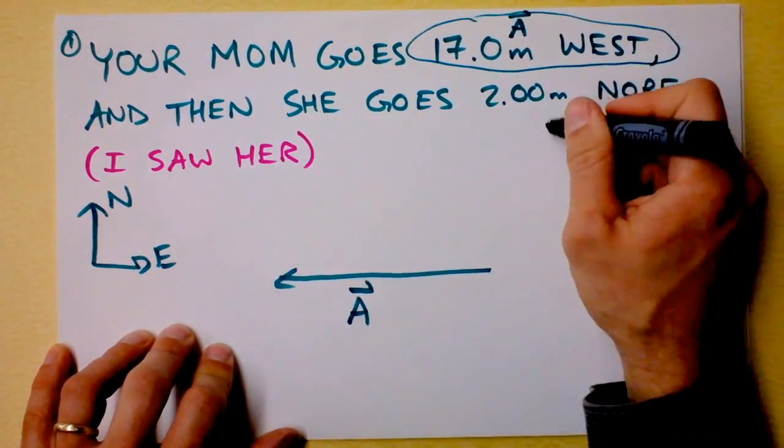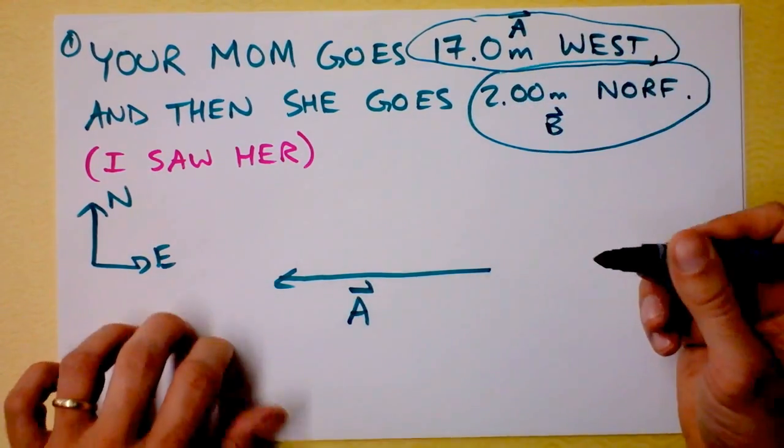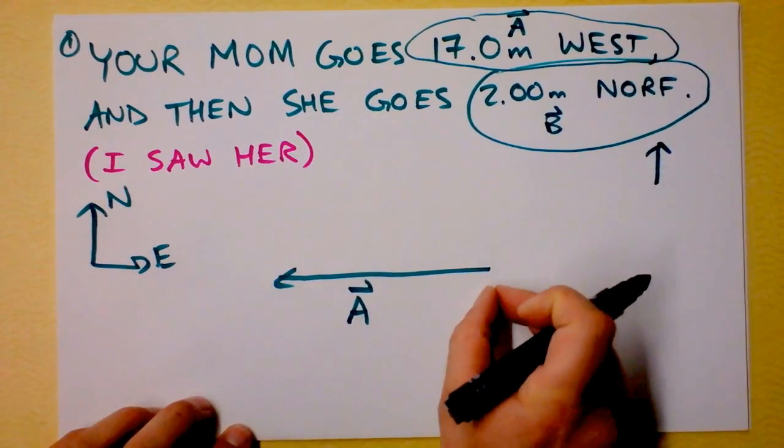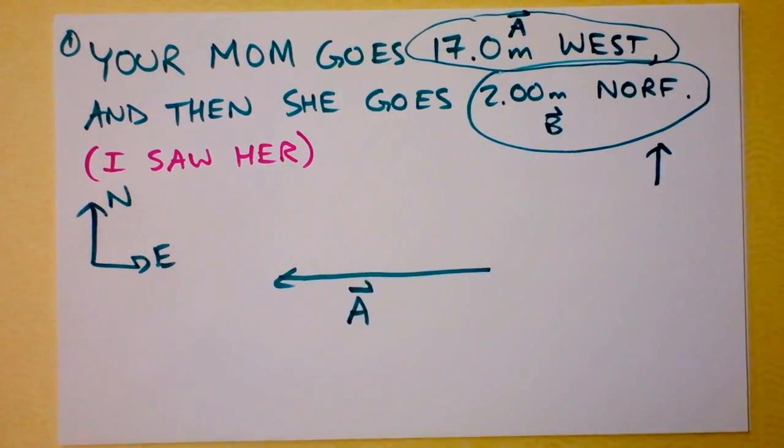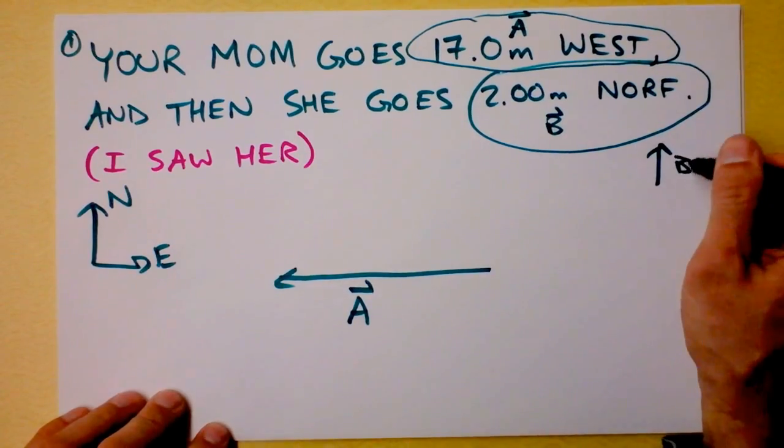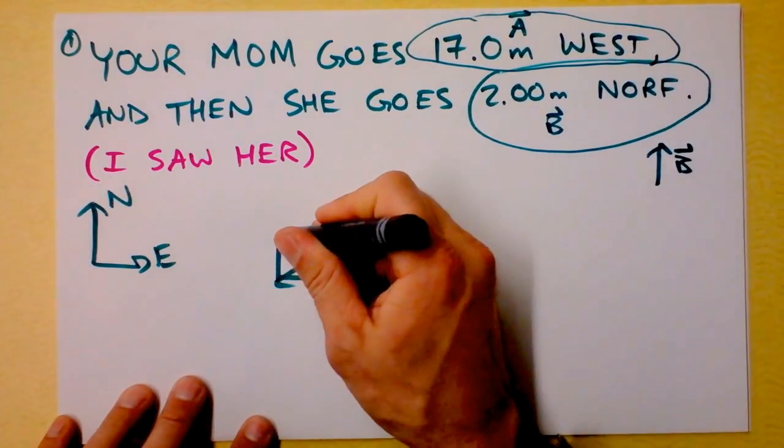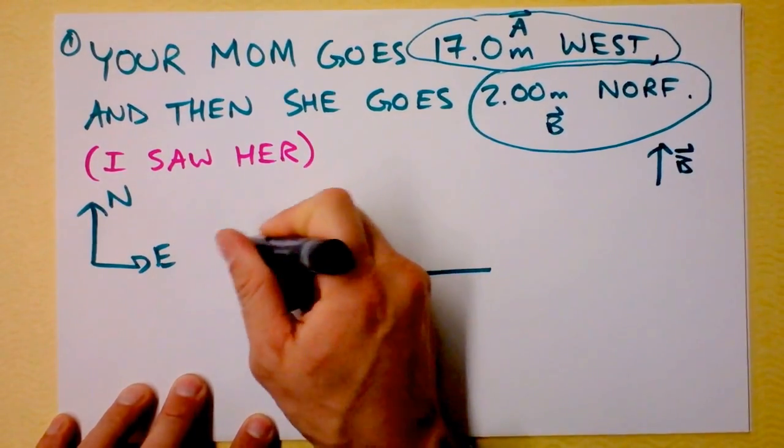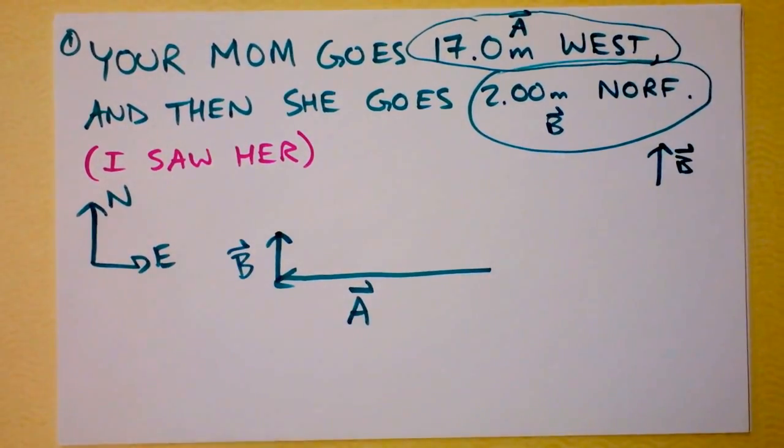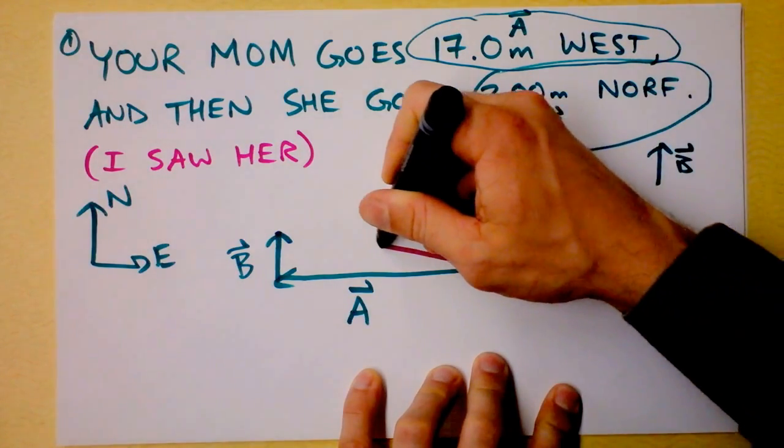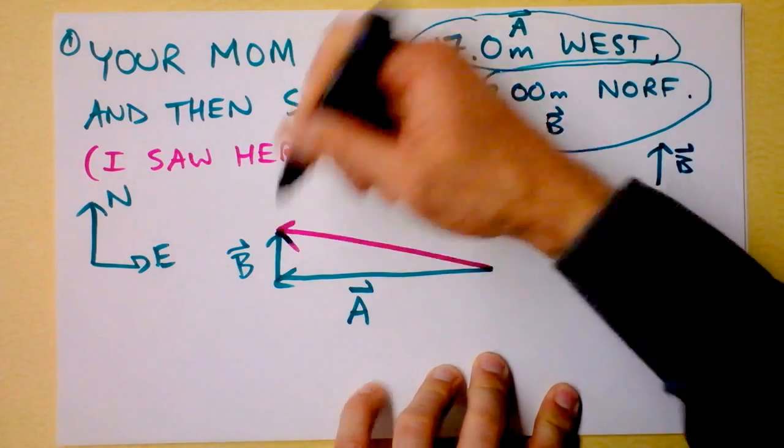And then I'm going to call that guy vector B, so I should draw that tip to tail. Well, this vector's supposed to be pointing to the north. So I could put that right here, or here, or here, or here. I'd like to put it tip to tail with vector A. I think this is probably the best place to put it. And it's a little bit shorter, so I draw it as a little bit shorter, but I'm not going to stress about rulers and all of that nonsense anymore. We're moving on.